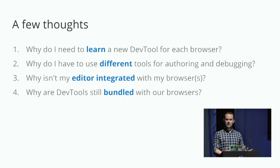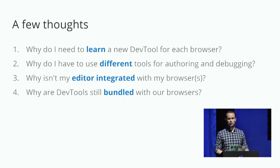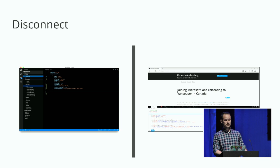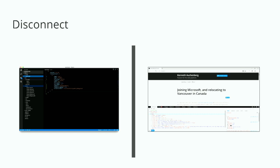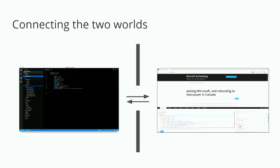A few thoughts: why do I have to learn a new DevTool for each browser? Why is that a given in 2016? Why do I have to use different tools between authoring and debugging? Why isn't my editor more integrated with my browsers? Why are DevTools still bundled with our desktop browsers — you can't open an iPhone app and open a DevTool on your iPhone. There's basically a massive disconnect between the authoring side and the debugging side. At Microsoft, over the past months, we've been trying to figure out if we can do better, because we think DevTools and editors are complementary — they shouldn't replace each other, but they should work together somehow.